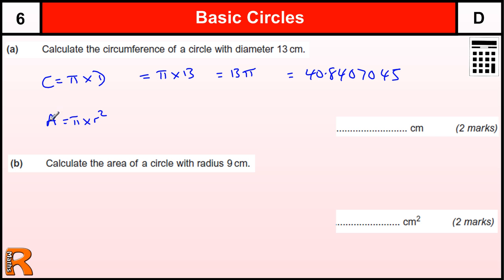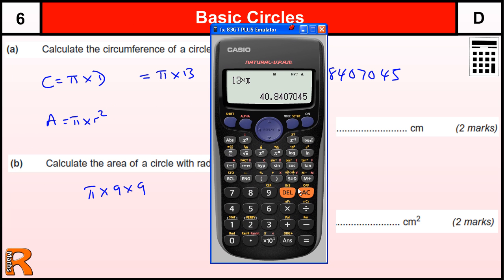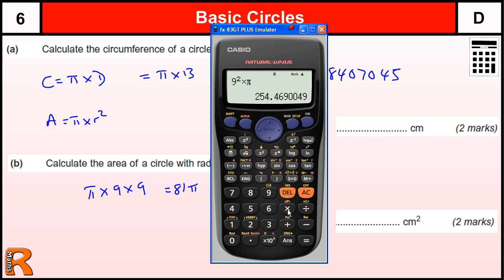So when we're working out the area, we're using A equals pi r squared. The radius we're told now is 9, so we've got pi times 9 times 9. Be careful with this r squared — you don't times the pi and the r and then square; you must square and then times by pi. Now you can write 81 pi, that's fine. But again, some people want the decimal value for that, which is 254.4690049.